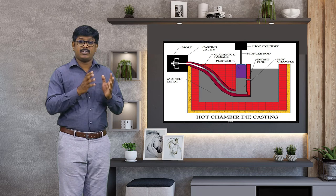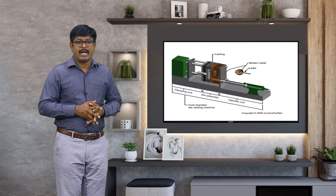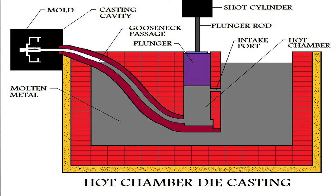High pressure die casting has two types: the hot chamber process and the cold chamber process. In the hot chamber process, this is applicable only for zinc and other low melting point alloys that do not affect or erode metal parts, cylinders, and plungers.